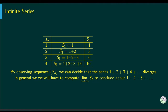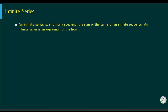Informally speaking, an infinite series is the sum of the terms of an infinite sequence. A series is an infinite sum, shown by sigma from i equals 1 to infinity. Plugging in 1 gives a1, plugging in 2 gives a2, and so on. Sigma stands for the sum of these infinite terms.